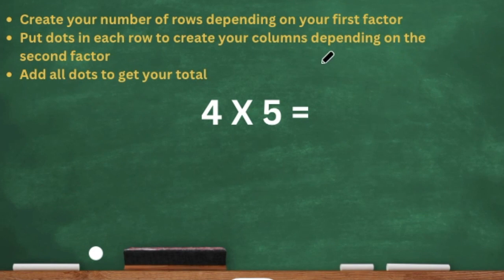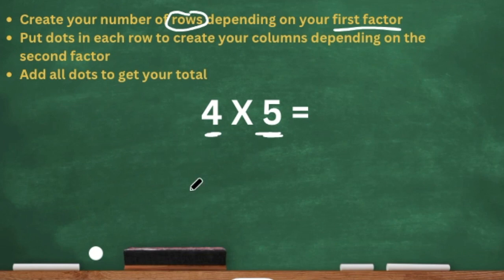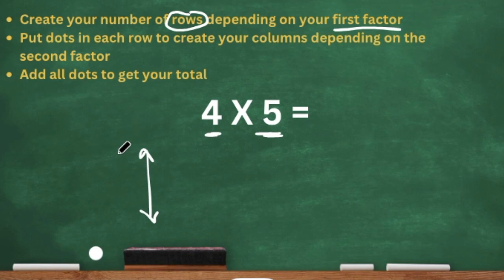So here we have four times five. Our criteria for success says: create your number of rows depending on your first factor. Our first factor is four and our second factor is five. To make rows, we look at our first factor, which is four. Rows go up and down — just think of an arrow going up and down. So we have four as our first factor, which is our rows. I'm going to go ahead and start my rows.